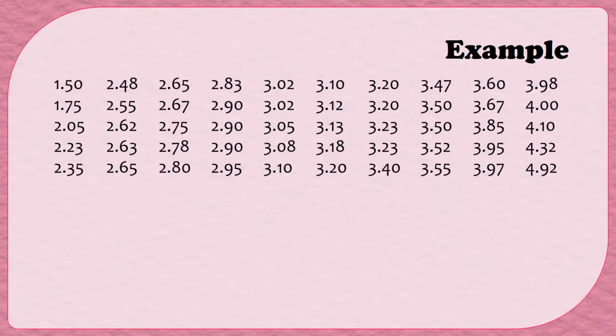All right, did you find your five-number summary? Let's see how you did. The first step is actually to make sure our data values are in order, and fortunately for us, they are. So if I look down the first column, it begins at 1.50 and then goes to 1.75, 2.05, 2.23, 2.35, and then the next column picks up and continues in order, all the way over till the end. So fortunately, we don't have to reorder these values in order to find our five-number summary. Phew!